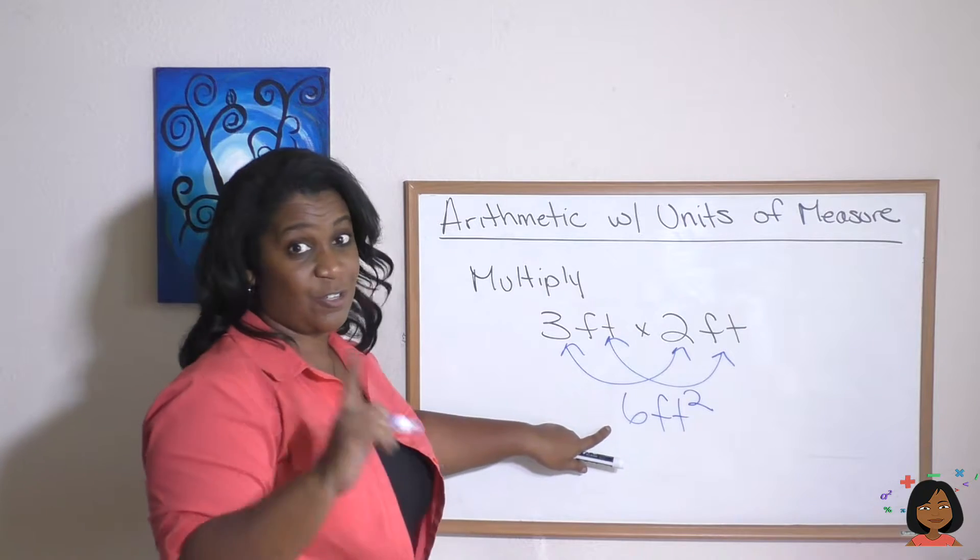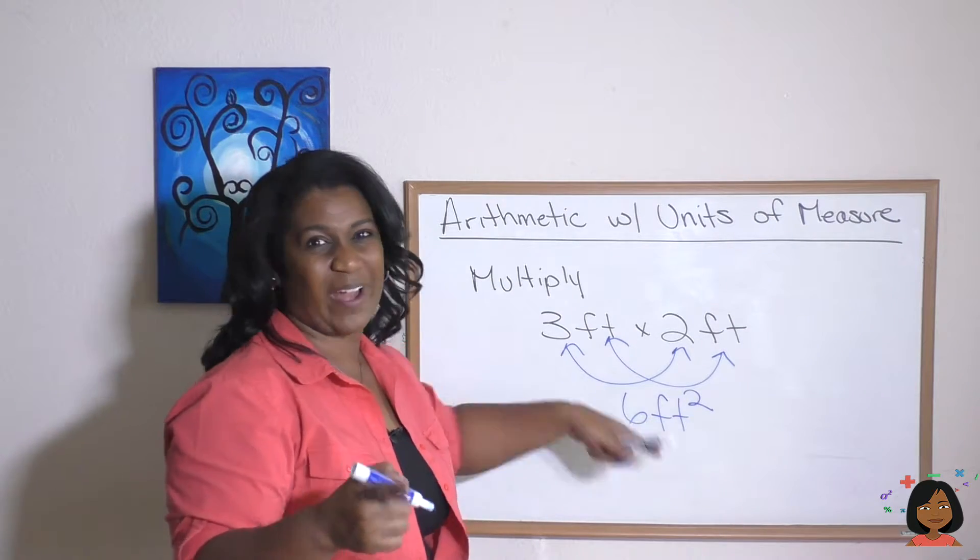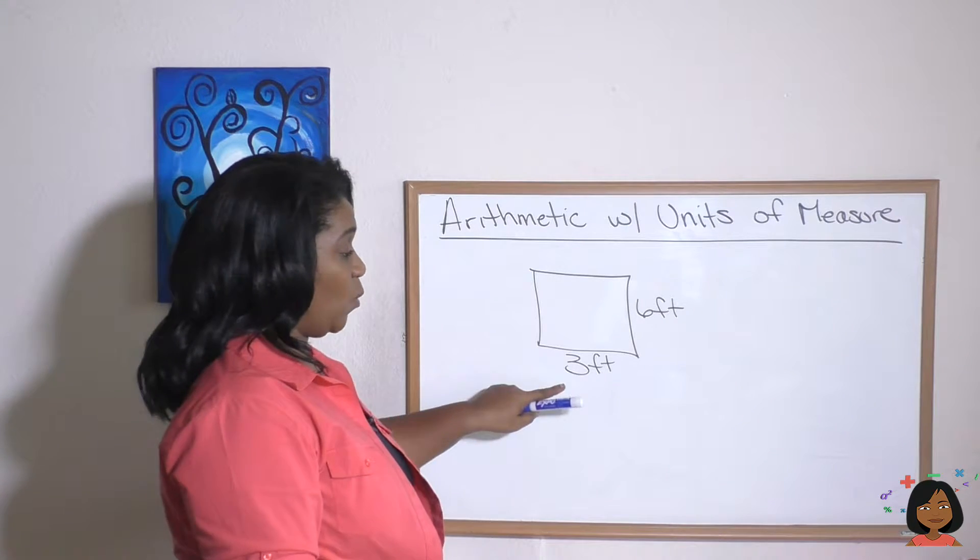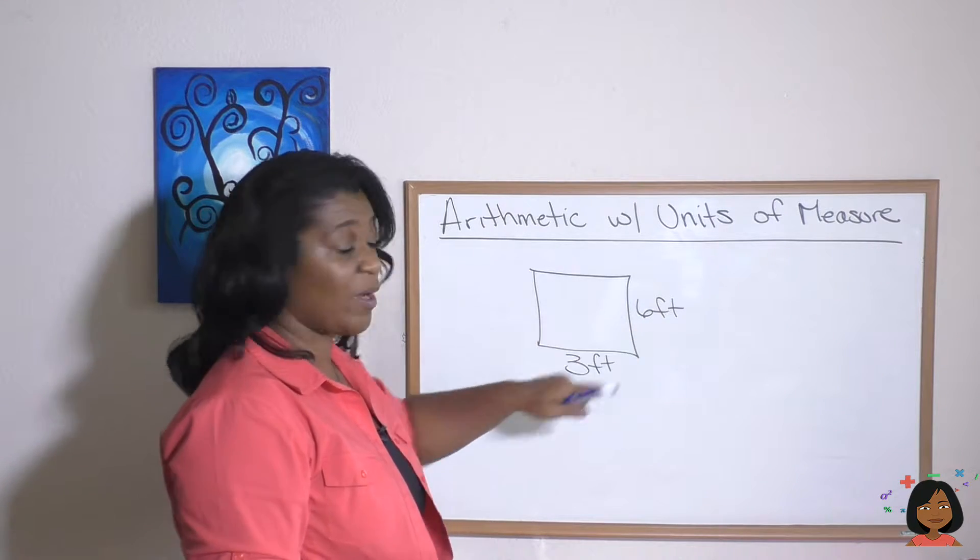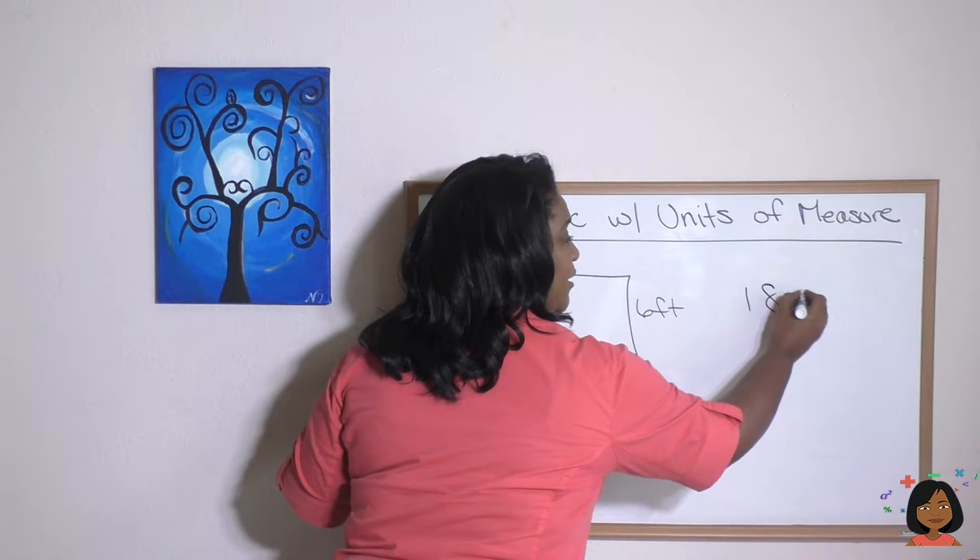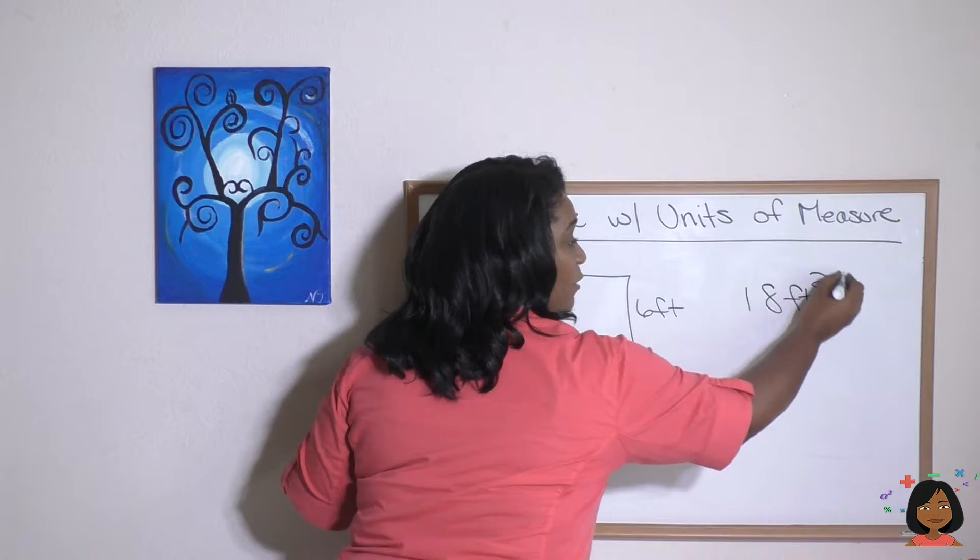Okay. So you never can forget that squared when we're multiplying. We want to find the area of something. We multiply our length times our width, right? So here we get three feet times six feet, we would get 18 feet squared, right?